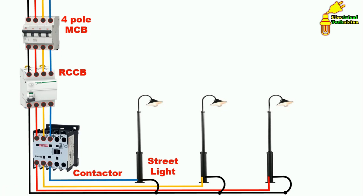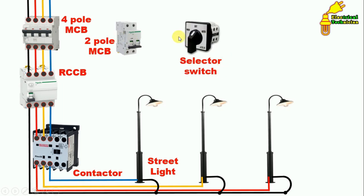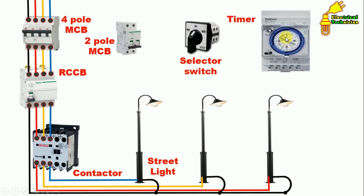Power wiring is completed. Now for protection of control wires, we use a two-pole MCB. After this, we use a selector switch. If we want to turn on in auto mode — that is through timer — we put the selector switch in auto. If we want to turn on manually, we select the manual position. In auto position, lights will turn on through the timer according to the time we set.